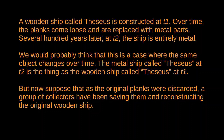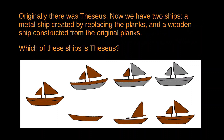But now suppose that as the original planks of Theseus are discarded, a group of collectors have been saving the planks and reconstructing the wooden ship out of them. In the end, they have a wooden ship made of the planks of the original Theseus, with all the planks in their original positions. So now we have two ships: a metal ship created from Theseus by gradually replacing the planks, and a wooden ship reconstructed from the original planks of Theseus. The question is: which of these two ships is the original ship of Theseus?